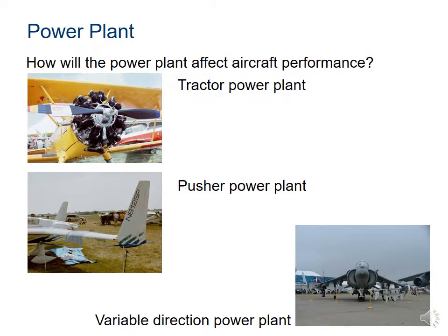The power plant affects how much lift we can provide. The tractor power plant is right on the front of the aircraft with the entire engine exposed, which may increase drag. The pusher power plant is behind the aircraft, pushing it forward. And there's a variable-direction power plant that can act in different directions depending on what's needed — pushing backward or forward depending on the situation.